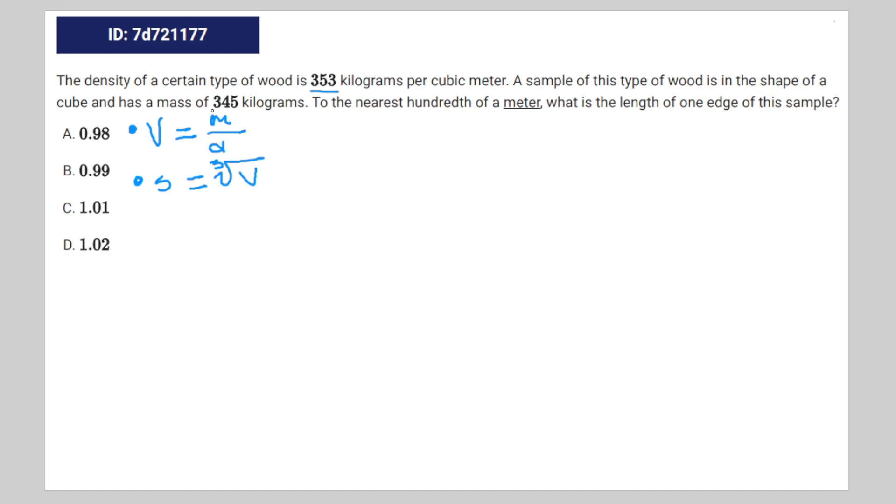So we're given two values: that's 353 for the density and 345 for the mass, so we can figure out the volume. That's going to be V equals 345 divided by 353.